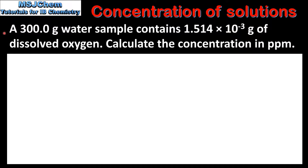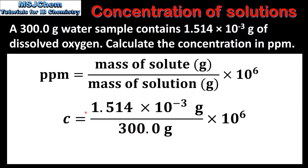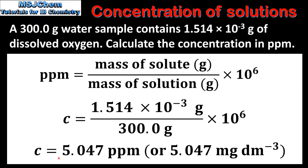A 300 gram water sample contains 1.514 times 10 to the negative 3 grams of dissolved oxygen. Calculate the concentration in ppm. We use the equation: mass of the solute divided by the mass of the solution, multiplied by 10 to the power of 6. The mass of oxygen is 1.514 times 10 to the negative 3 grams and the solution has a mass of 300 grams, giving a concentration of 5.047 ppm.